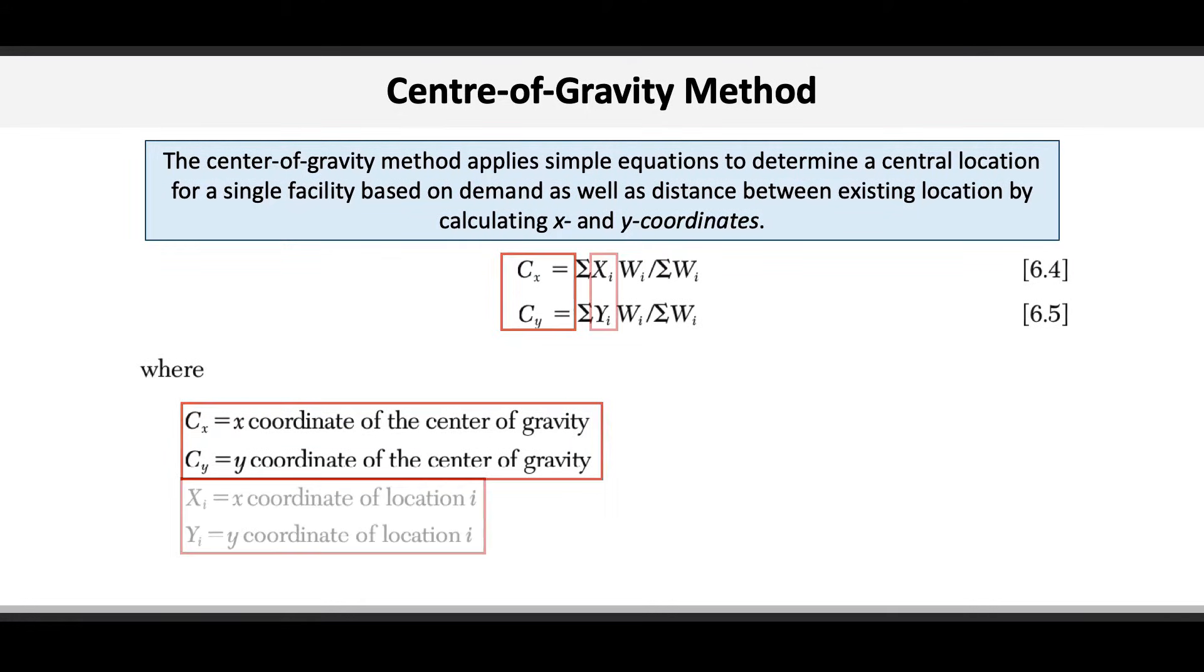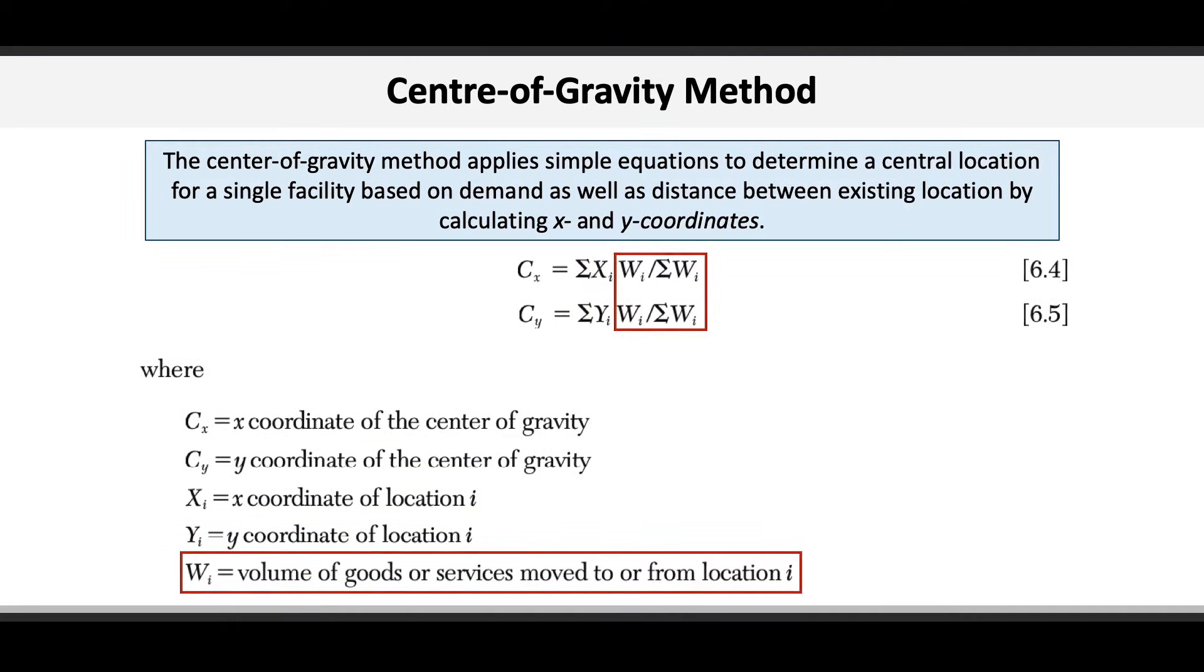Xi and Yi are simply the individual x and y coordinates of the existing facilities or customers that we're looking to serve, or in this case the coordinates for the different sections of the city. Wi is simply the volume of goods, or in this problem contracts, in each section of the city.